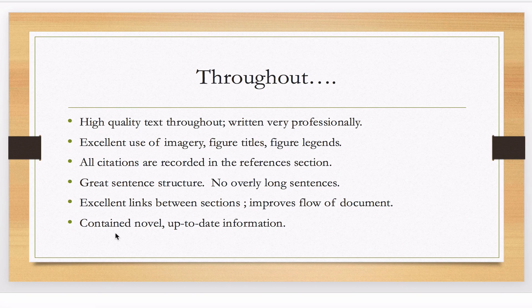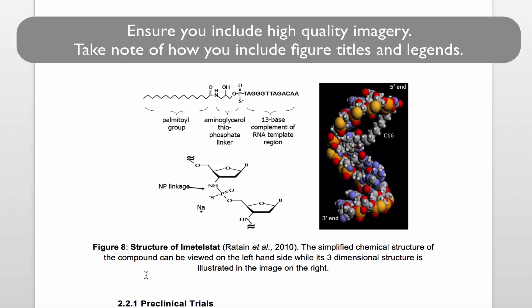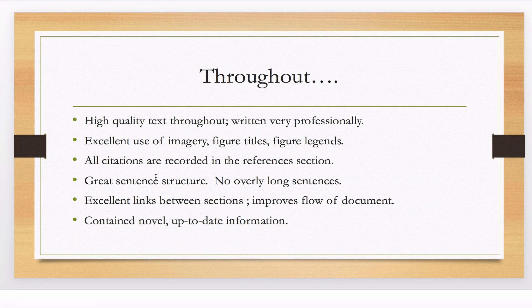There was excellent use of imagery, figure titles, and figure legends. For example, she has a particular figure numbered correctly, the title in bold, a citation for where the information was sourced from, and a legend which actually describes the figure — it's very important to have all of those elements. All citations were recorded in the reference section. If you have fifty citations in your document, there should be fifty citations fully referenced in the references section — sometimes ones are missing, so it's important to do a cross-check before you submit.